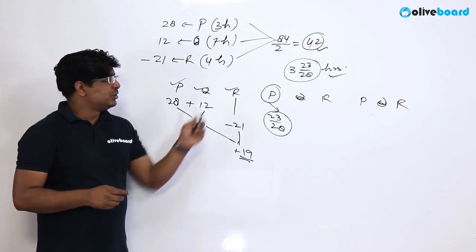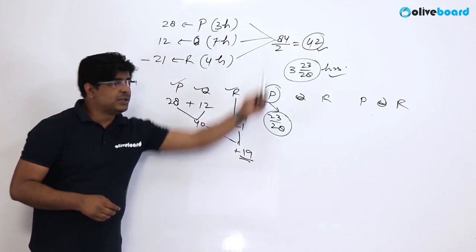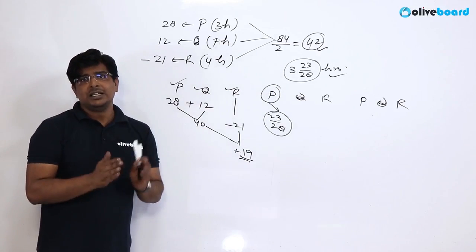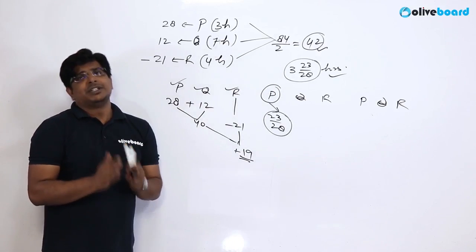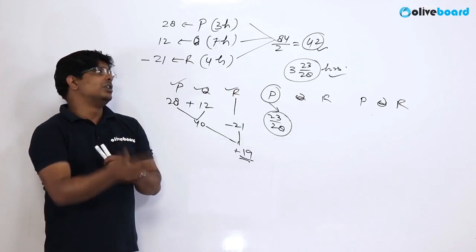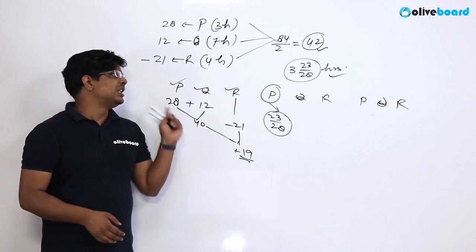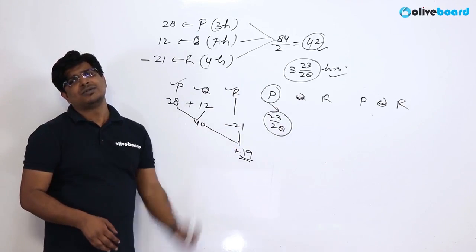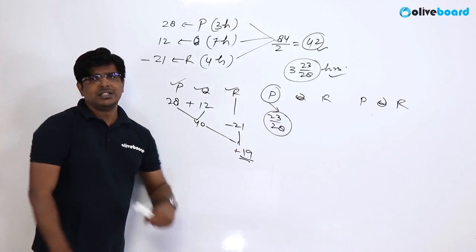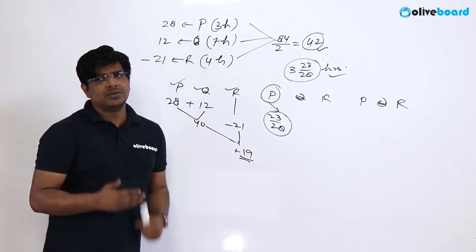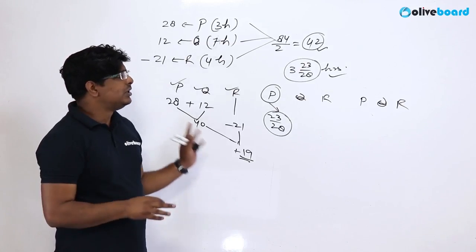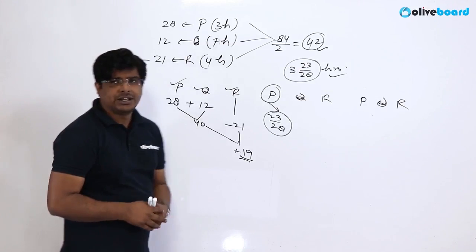If you understand how big a number is, you make a repetition of the number. I have told you, you have told me a number. But you have told me it's a very small number. So you have to load it. You have to do it.